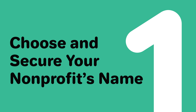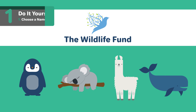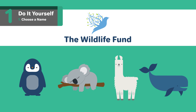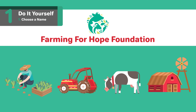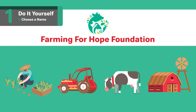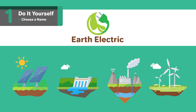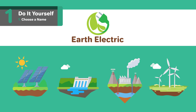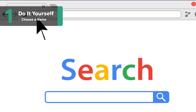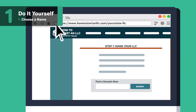Step one: choose and secure your nonprofit's name. The name you select for your nonprofit will establish its brand — it's the first thing most people will learn about your organization. It's important to pick a name that both aligns with your mission and follows the rules of naming guidelines in Missouri. You'll need to check Missouri's specific naming requirements, but in general, follow these rules when choosing a name.